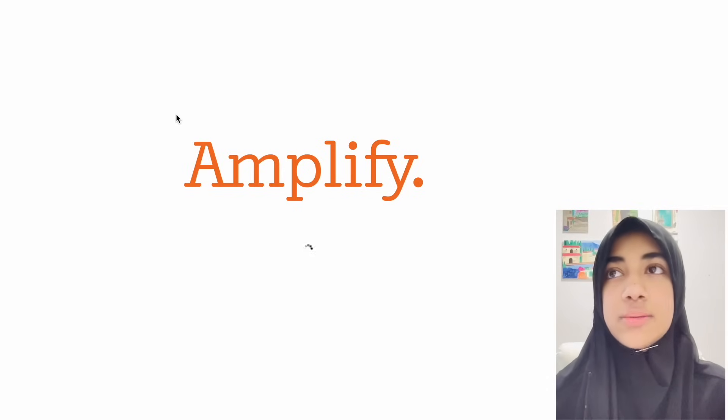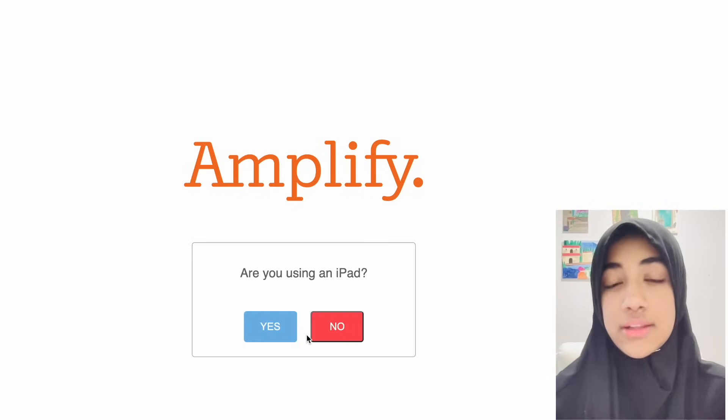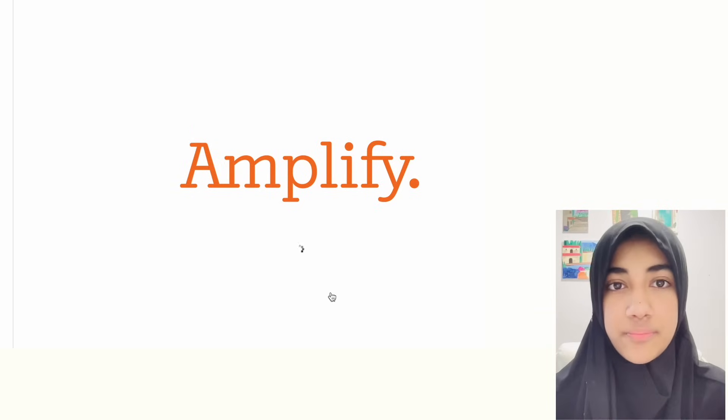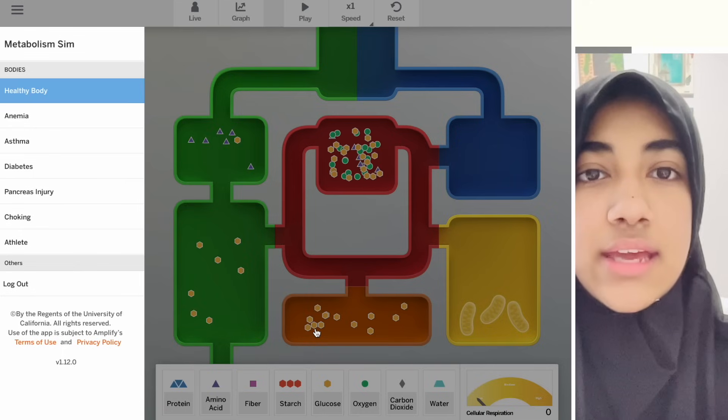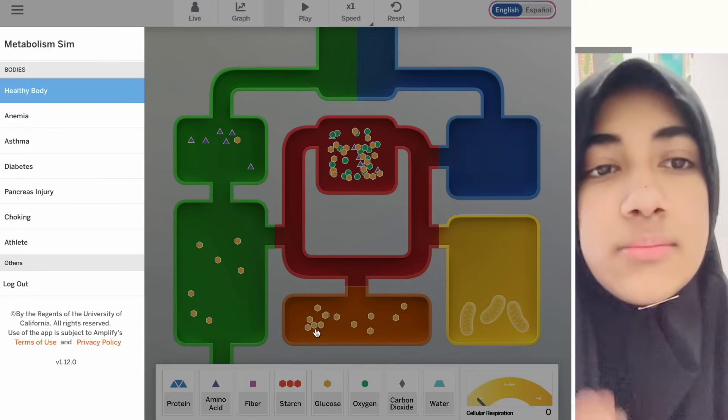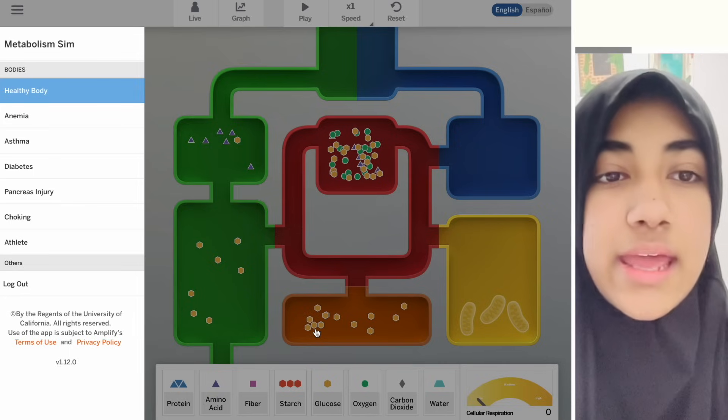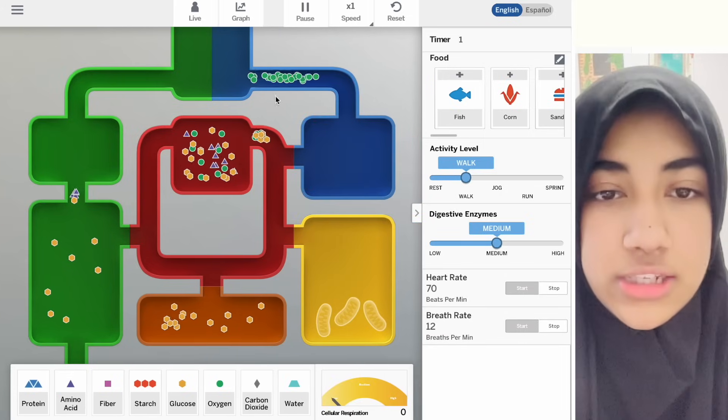We have a healthy person's body, healthy person's digestive system, and their body system. Let us see, here is our metabolism sim. Here we can see healthy body and active simulation.